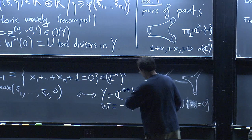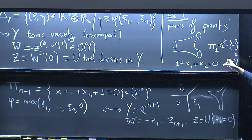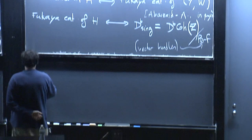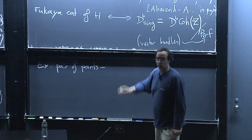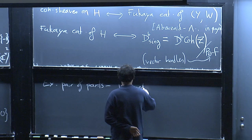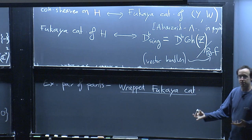I want to devote most of my time today to explaining how this works in the case of the ordinary one-dimensional pair of pants, because I think this is more useful than going further at this point. The first thing I need to tell you about is what is a Fukaya category. We're going to see a version called the wrapped Fukaya category, which is relevant to this form of mirror symmetry. This was introduced by Abouzaid and Seidel about ten years ago.